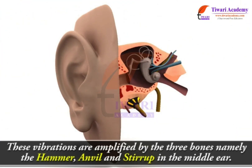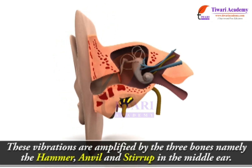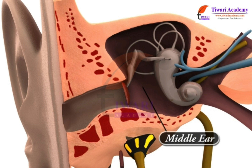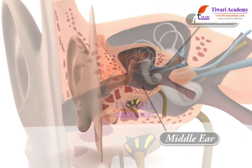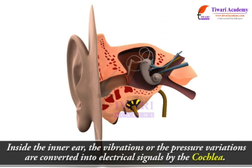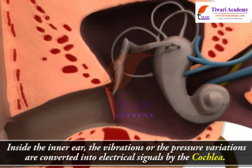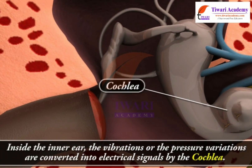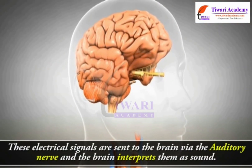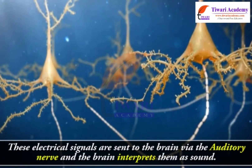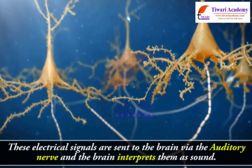These vibrations are amplified by three bones — the hammer, anvil, and stirrup — in the middle ear. The middle ear transmits these vibrations to the inner ear. Inside the inner ear, the vibrations or pressure variations are converted into electrical signals by the cochlea. These electrical signals are sent to the brain via the auditory nerve, and the brain interprets them as sound.